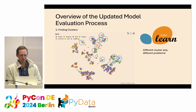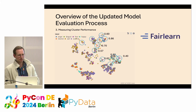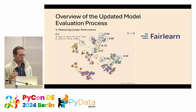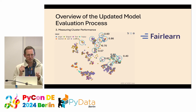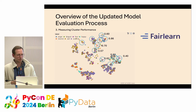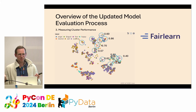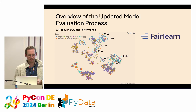Once we've found those clusters of similar data points, we simply measure how well our model performs on them — using our target metric, or something more sophisticated if there are class imbalances. Basically, you generate a list of clusters from your unstructured data where your model is not performing well, order them, and focus on the ones where the model works worst.